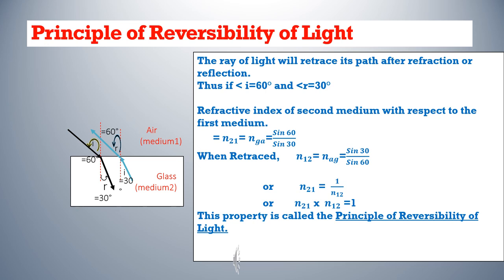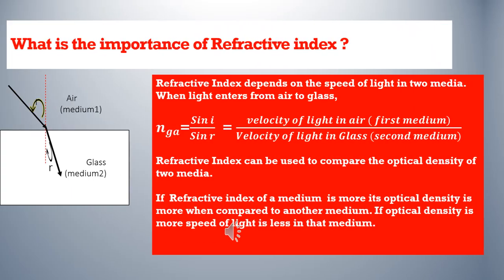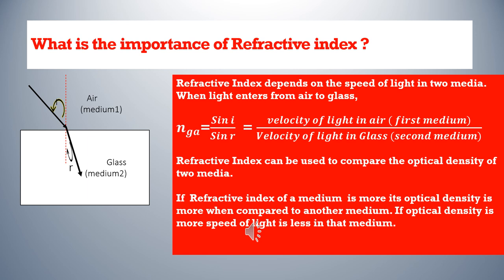Refractive index also depends on the speed of light. When light enters from air to glass, the refractive index of the second medium with respect to the first – that is, refractive index of glass with respect to air – equals sin i / sin r, which also equals the velocity of light in air divided by the velocity of light in glass, or the velocity of light in the first medium divided by the velocity of light in the second medium. Thus, refractive index can be used to compare the optical density of two media. If the refractive index of a medium is more, its optical density is more; and if the optical density is more, the speed of light is less in that medium.